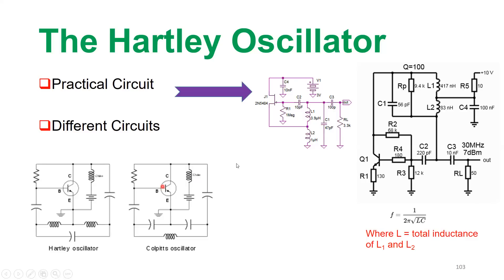In summary, the Hartley oscillator is an LC type oscillator that produces a sinusoidal waveform. The circuit can be analyzed using FET, BJT, or even an operational amplifier. You should now be able to identify the feedback network, the gain amplifying unit, biasing components, and coupling capacitors. The BJT or FET can be used in all three configurations — common base, common collector, common emitter for BJT, and common drain, common source, common gate for FET — depending on impedance requirements.